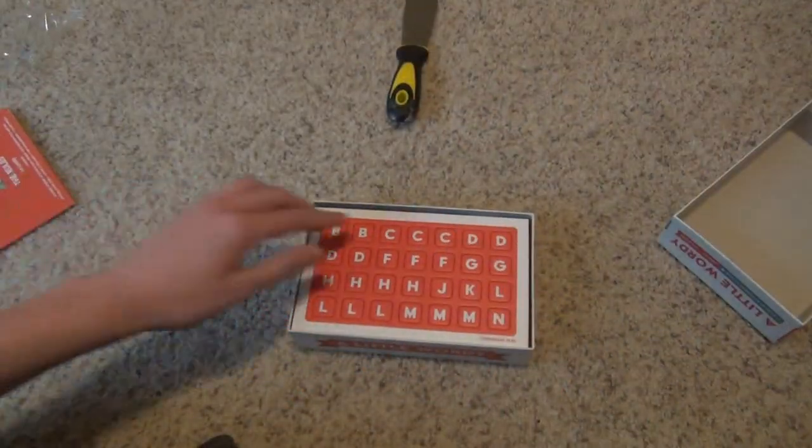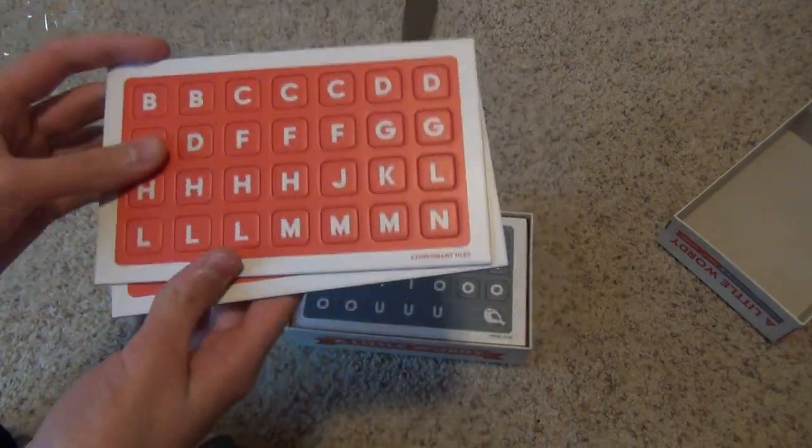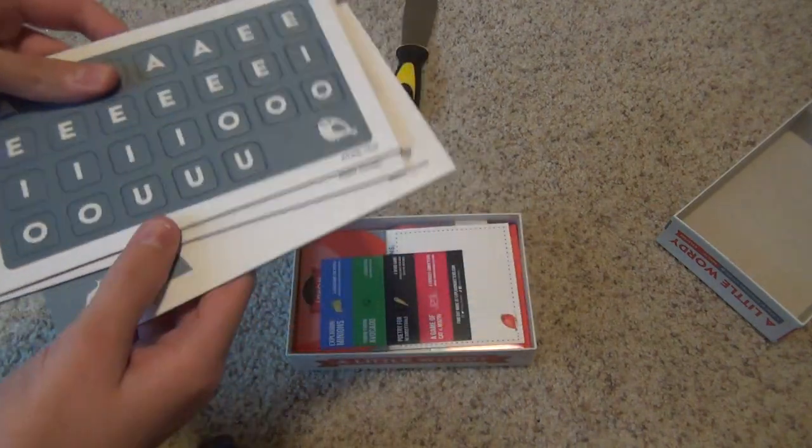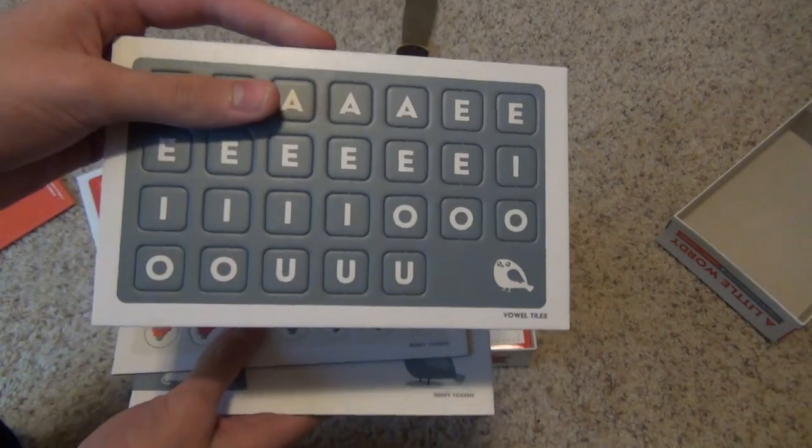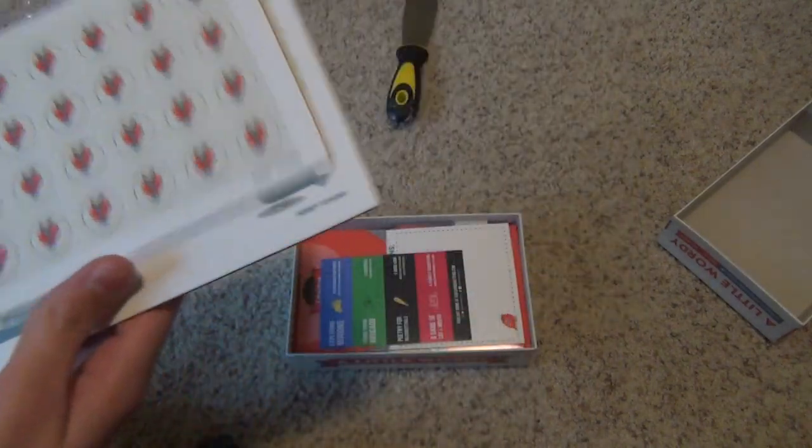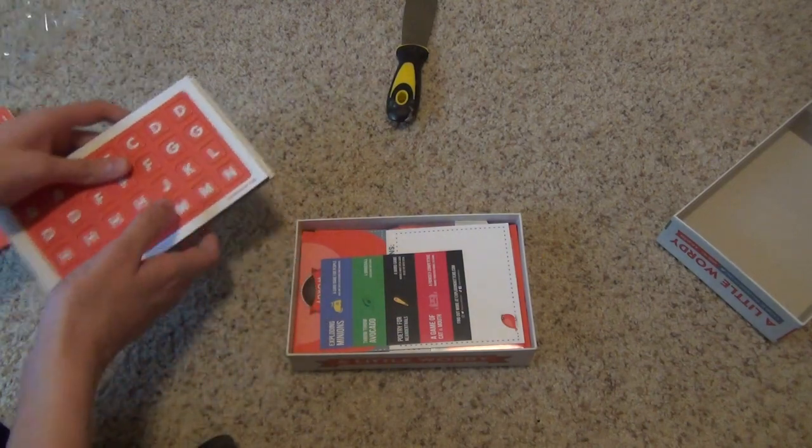Okay, then you get these tiles. You get two red plates of tiles. Then you get blue tiles for vowels. Then you get berry tokens and more berry tokens. Okay, so let me just set those aside.